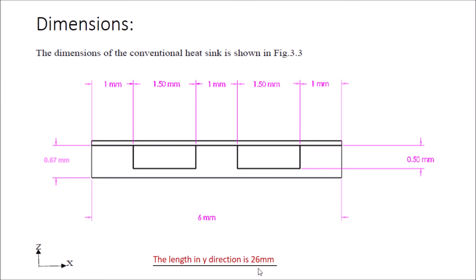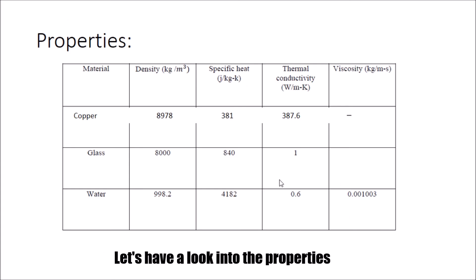Let's have a look into the properties. The materials are given in the left column, and each row identifies their properties: density, specific heat, thermal conductivity, and viscosity.